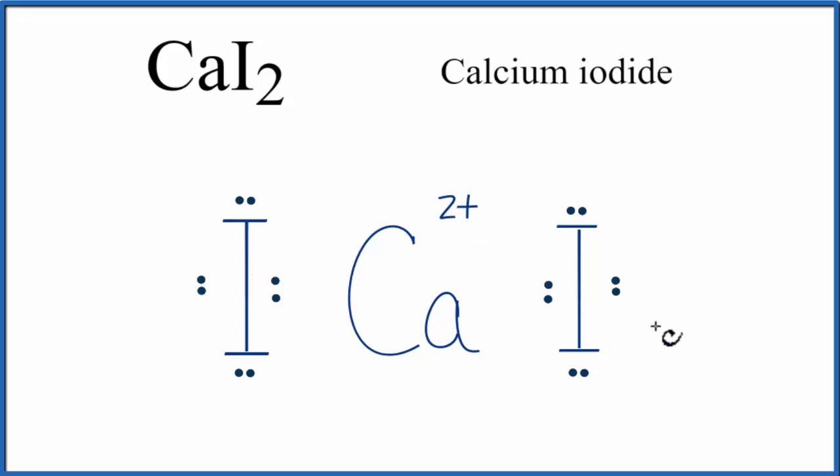The iodines, each one of them gained an electron, so they become negative. If you add these up, it equals zero, because this is a neutral compound.